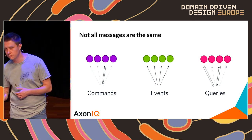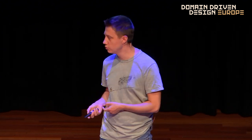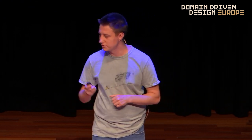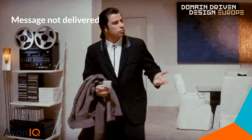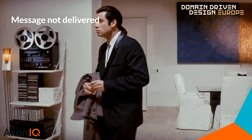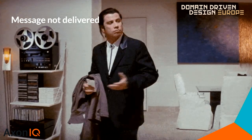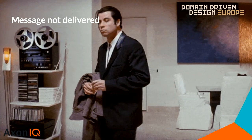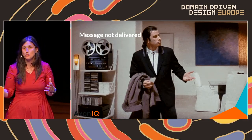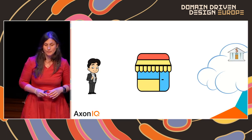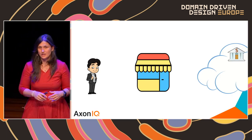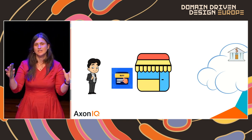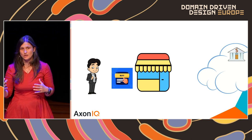In distributed systems, we just need to distribute those messages — what could possibly go wrong? A lot. The first problem is message not delivered: the message cannot reach its destination. For example, when a customer clicks buy, a payment request command is sent to the payment service. In the normal case it reaches destination and a confirmation returns. In the less fortunate case, the request never reaches destination, or the confirmation never comes back.